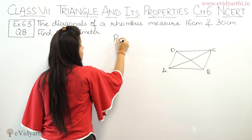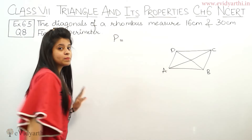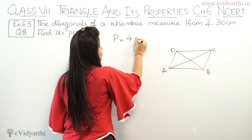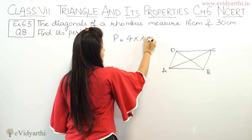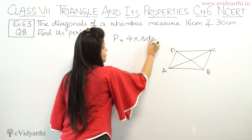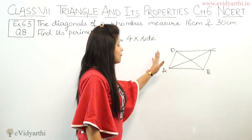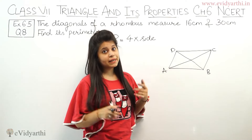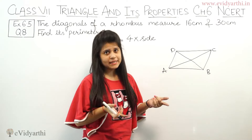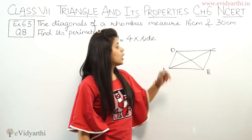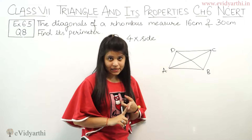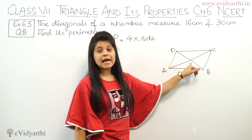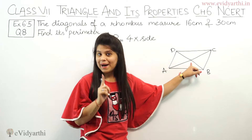The first thing is, the perimeter of a rhombus formula is 4 times the side. Now we need to know the properties of a rhombus: all sides are equal, and the diagonals bisect each other.